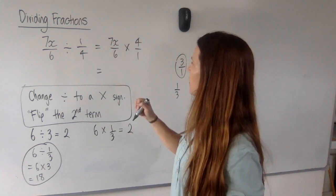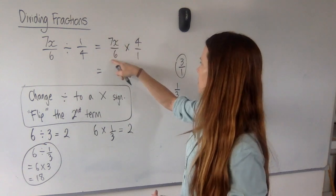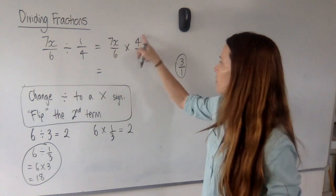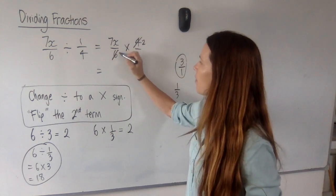All right, what do I do next? Look for things that can be simplified. 7 and 6, no. 4 and 1, no. 4 and 6, yes. They're both even. I can halve them. Let's halve this one, halve this one,